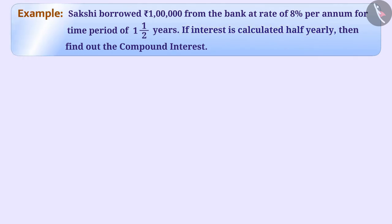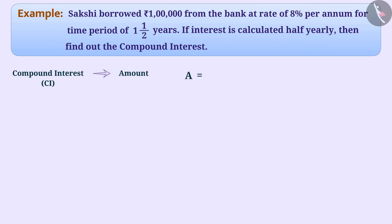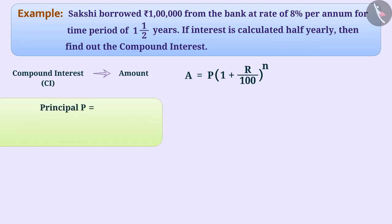Now let's solve this question. First, we will calculate the amount related to compound interest. The formula for amount is A = P × (1 + R/100) raised to the power 3.